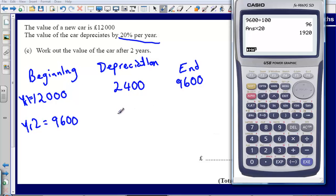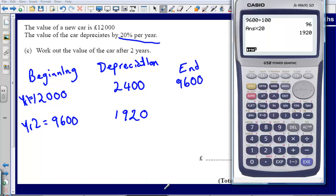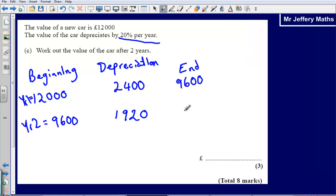So the depreciation, the amount that we lose from this price at this time in year 2 is going to be £1,920. So how much will it be worth at the end of the year? Well that's simply going to be £9,600 minus £1,920. So that gives us a value at the end of the year for our car of £7,680.